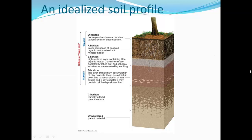Here's a diagram showing all that. At the very top is loose plant and animal debris — picture walking through pine forests with a lot of pine needles. That's your O horizon. The A horizon includes decayed organic matter mixed with mineral matter. The E horizon is a light-colored zone with very little organic matter; clay minerals have been depleted and washed out by leaching. The B horizon is the layer of maximum accumulation of clay minerals, and can be reddish due to iron oxides or have white calcite deposits in dry climates. The C horizon is partially altered parent material, and below that is unweathered bedrock.